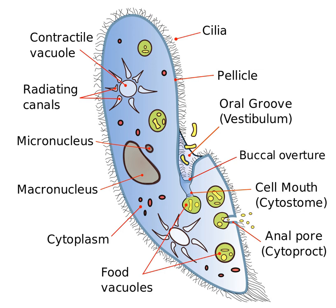A cytostome, from cyto meaning cell and stomae meaning mouth, or cell mouth, is a part of a cell specialized for phagocytosis, usually in the form of a microtubule-supported funnel or groove.